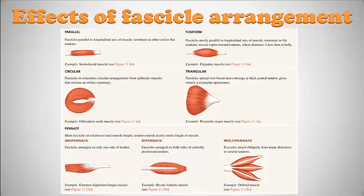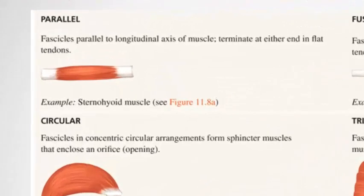Skeletal muscle fibers are arranged within the muscle in bundles called fasciculi. The muscle fibers are arranged in parallel fashion within each bundle, but the arrangement of fasciculi with respect to tendons may take one of five characteristic patterns: parallel, fusiform, triangular, circular, and pennate. The fascicular arrangement influences flexibility or the amount of power a particular joint can generate.